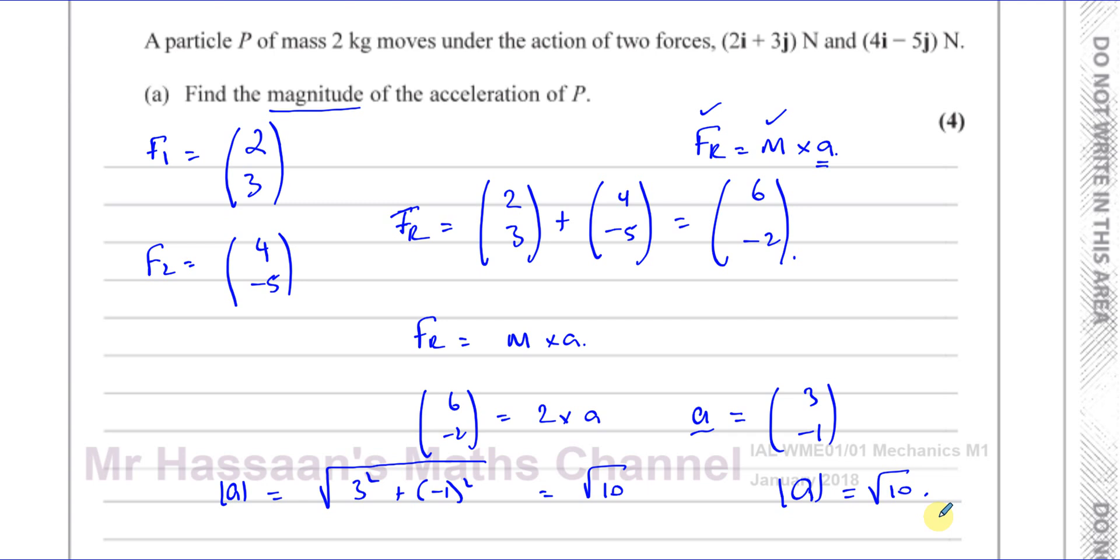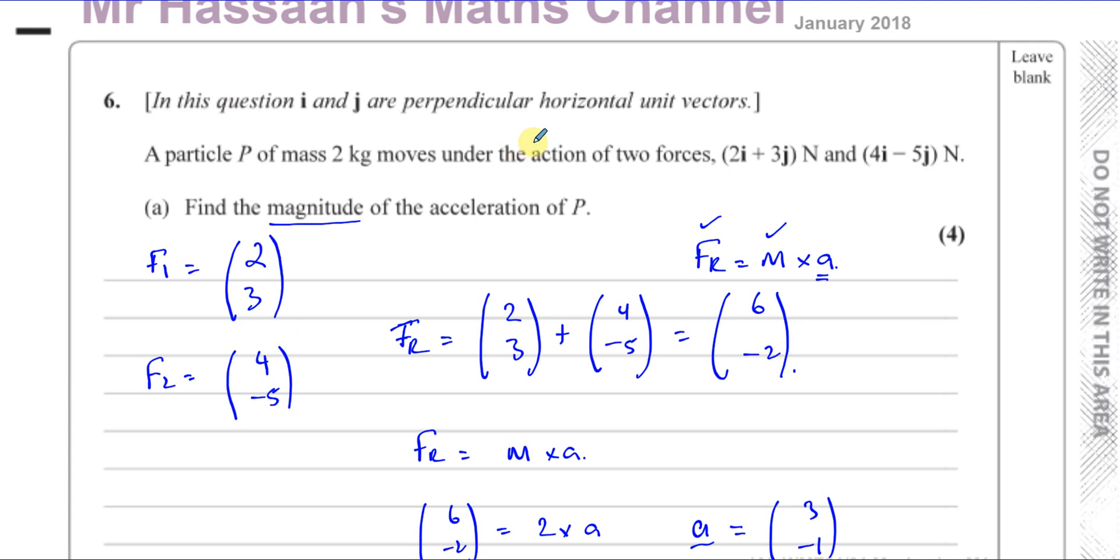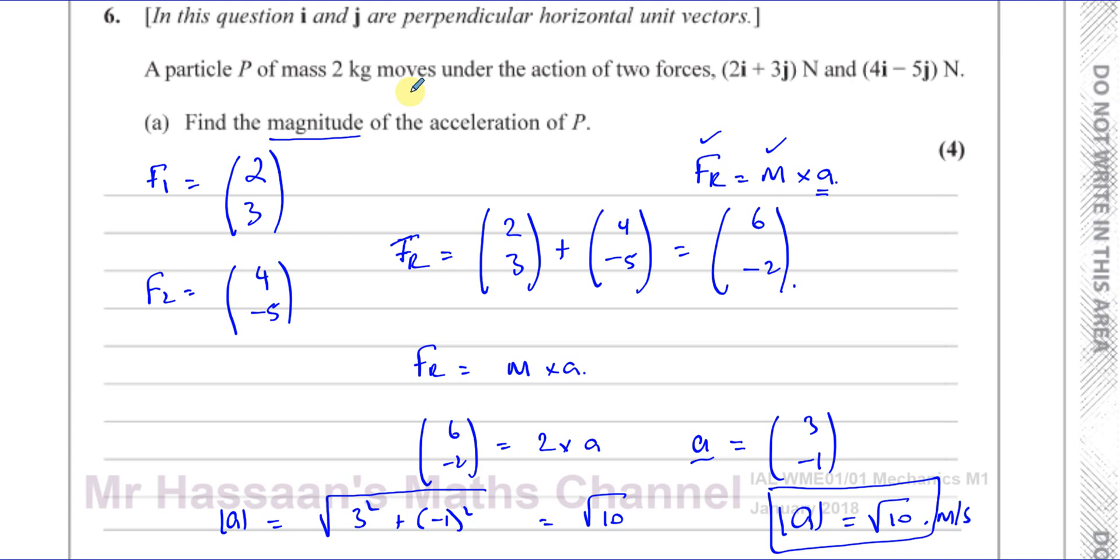That's in the simplified surd form. Everything's in SI units, so it's going to be meters per second squared. So that's the answer to 6 part A.